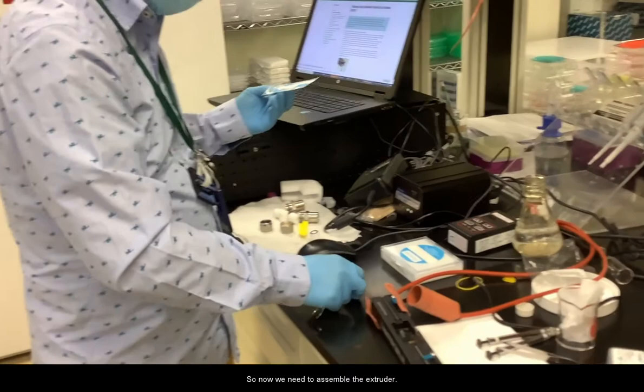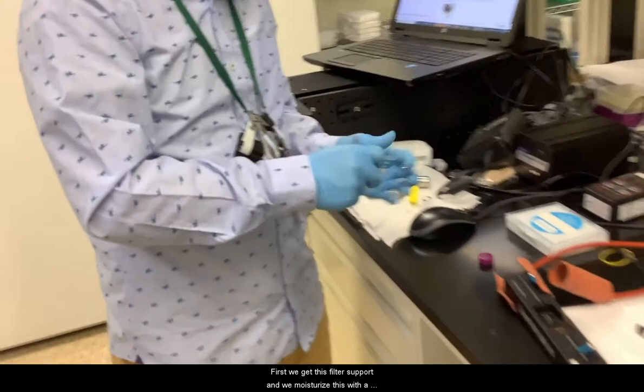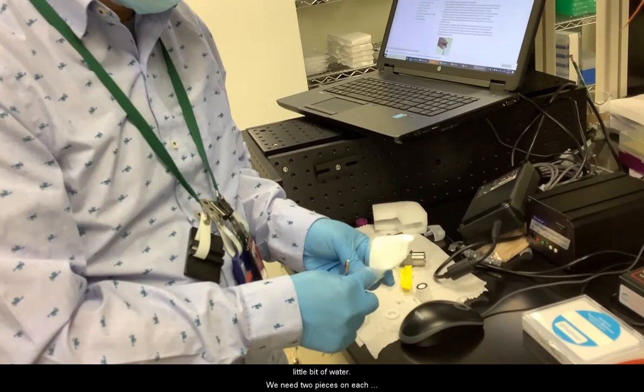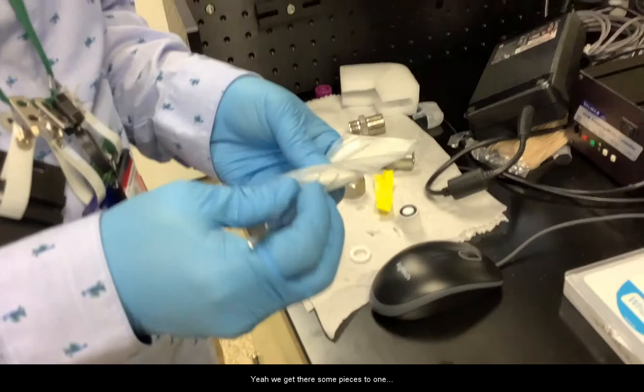Now we need to assemble the extruder. First we get this filter support, and then we moisturize this with a little bit of water. We need two pieces on each side.